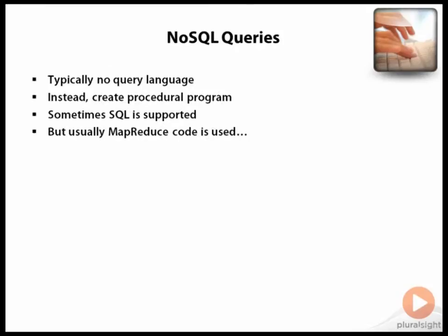The way queries work with most NoSQL databases, they tend to be imperative programs rather than declarative queries and expressions. In a number of NoSQL databases, a very important concept is the notion of a distributed query approach called MapReduce.